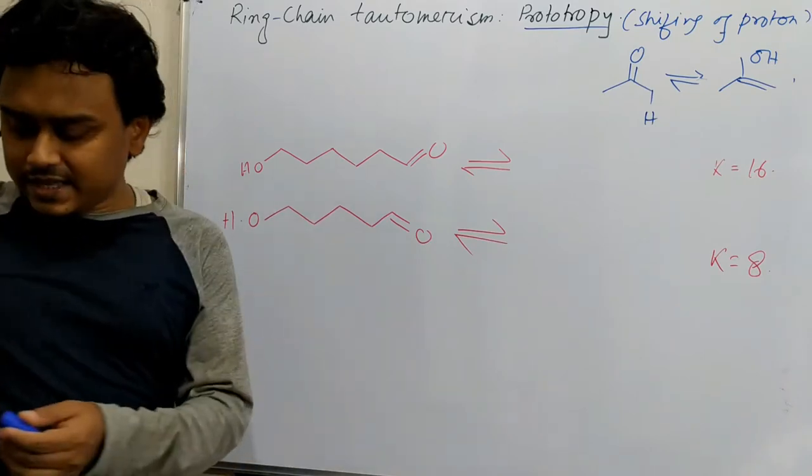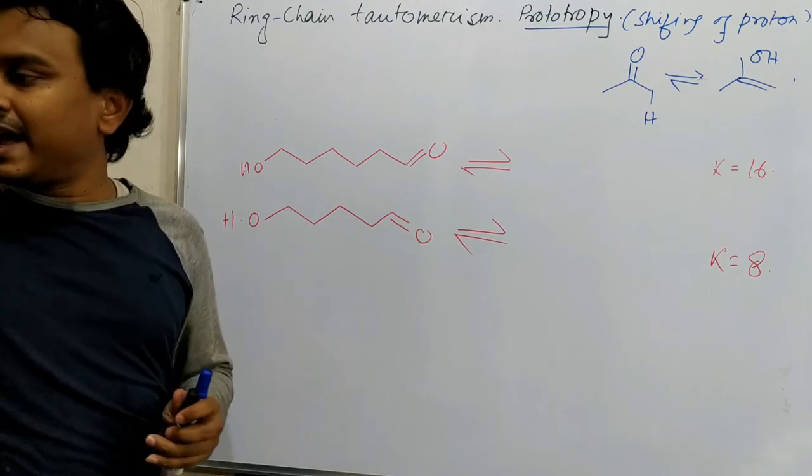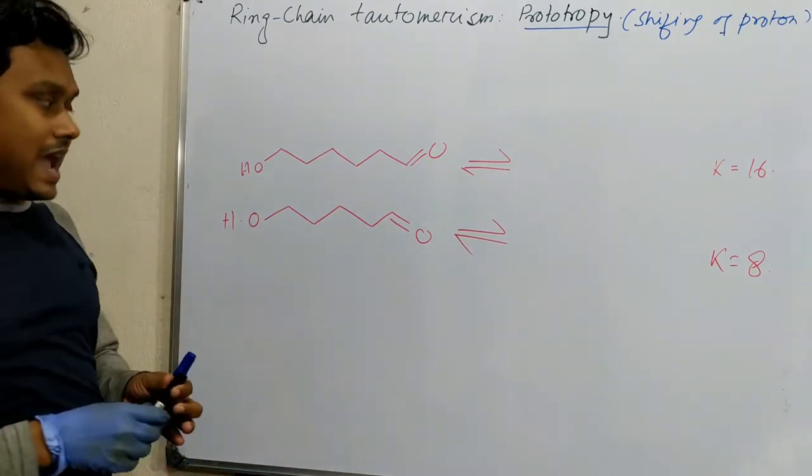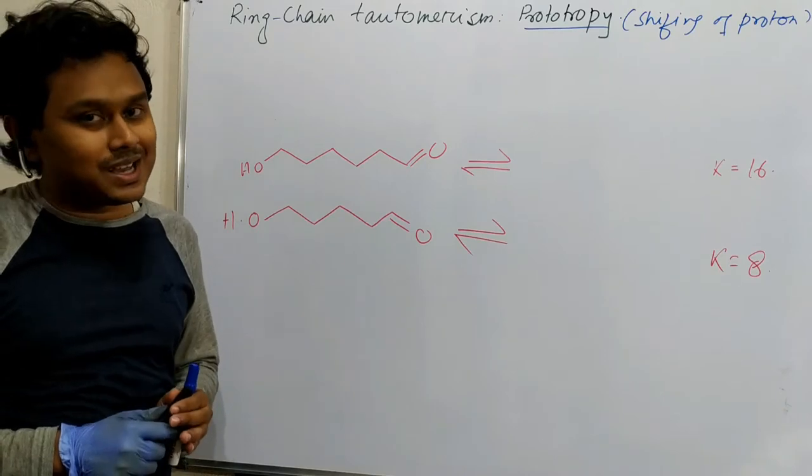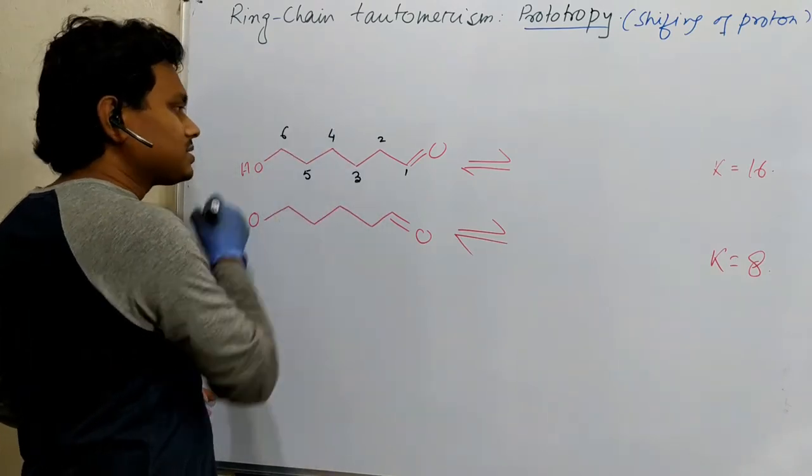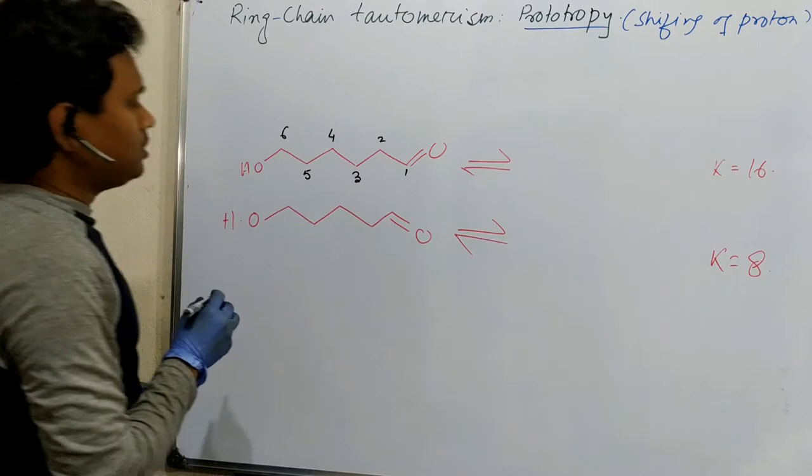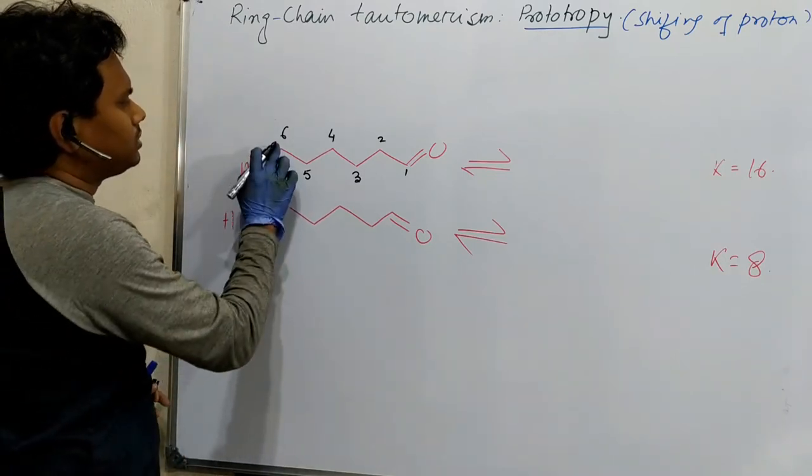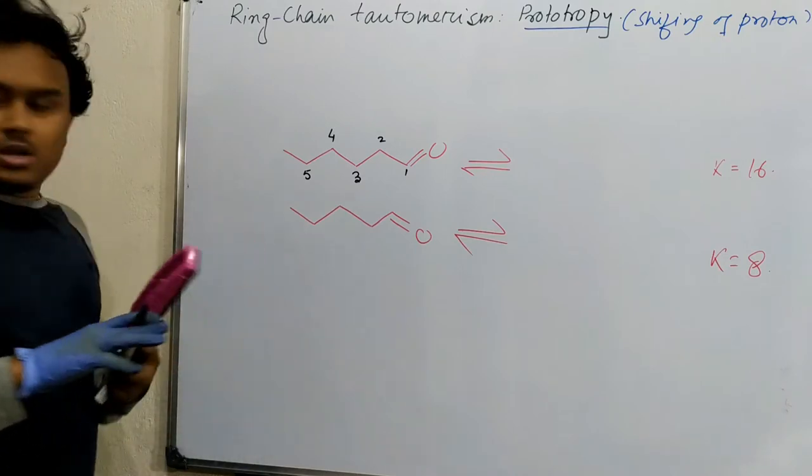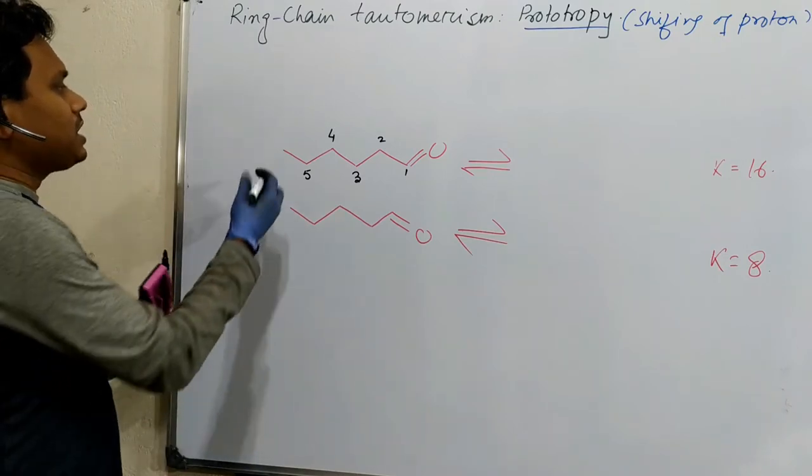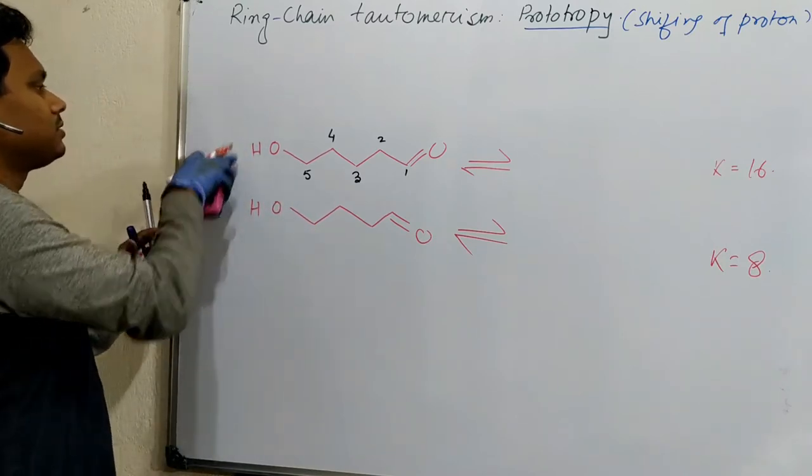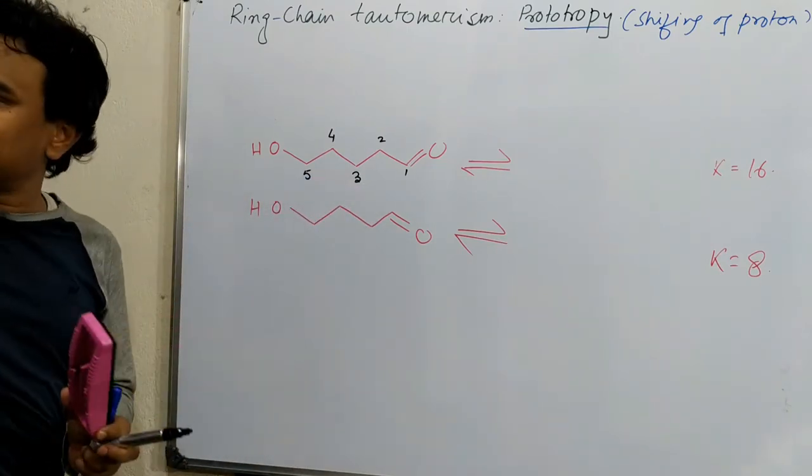So, what is actually happening in this case? See, that this is a hydroxycarbonyl compound. And in such cases, I always recommend trying to understand the number and ring formation. See, 1, 2, 3, 4, 5, 6. Sorry, I made a mistake. This should be, means, it should be 5-hydroxy. So, it is 5-hydroxy pentanal, and it is 4-hydroxy butanal. Means, carbon chain number 4.